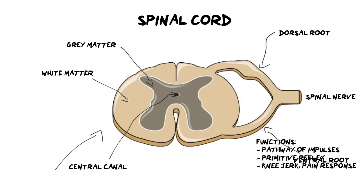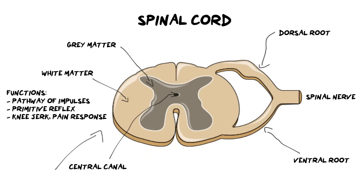The spinal cord's functions include being a pathway for impulses and the site of primitive reflexes, like the knee-jerk reaction or the pain response when you pull away from something painful. A pathway of impulse moves from your spinal nerve into the spinal cord, traveling along the spinal nerve, going into the dorsal root and down into the spinal cord. A decision is then made in the spinal cord — that's why it's called a reflex — jumping the brain entirely. The decision leaves out the ventral root and back down the spinal nerve. This is called a reflex arc.